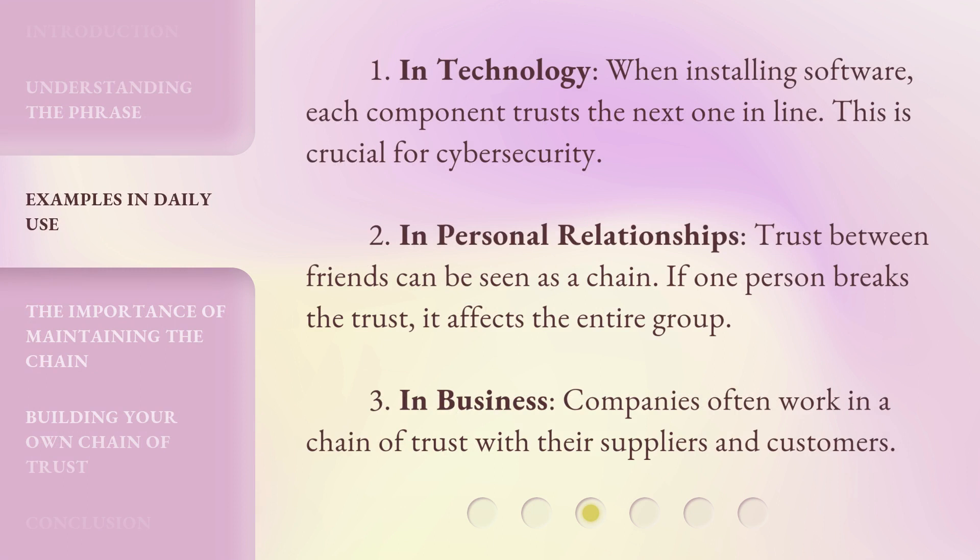1. In technology, when installing software, each component trusts the next one in line. This is crucial for cybersecurity. 2. In personal relationships, trust between friends can be seen as a chain. If one person breaks the trust, it affects the entire group.